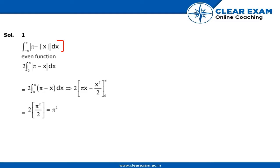So now we have two times the integration with limits 0 to pi of (pi minus x) dx, from which we get the answer 2 into pi squared by 2, which equals pi squared.